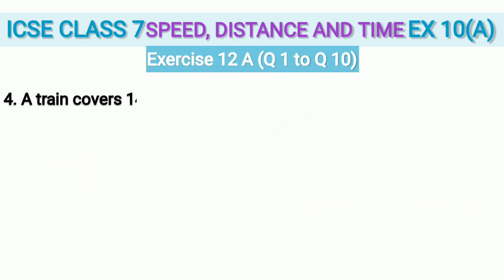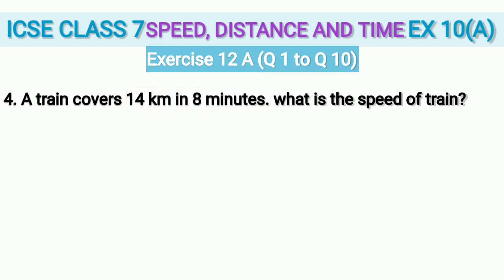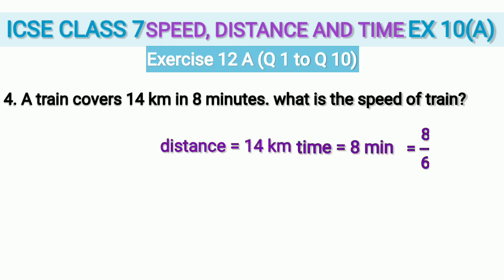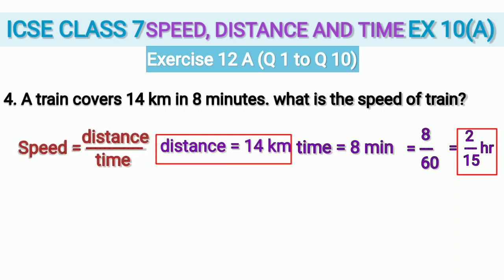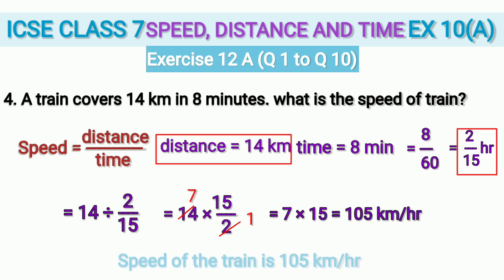Question 4: a train covers 14 km in 8 minutes. What is the speed of the train? We are given distance in kilometres and time in minutes. To find speed in km/h we convert 8 minutes to hours: 8/60, cancel using the 4 times table to get 2/15 hours. Substituting in speed = distance ÷ time: 14 ÷ (2/15) = 14 × 15/2. Cancel 14 and 2 — leaving 7 × 15 = 105 km/h. So the speed of the train is 105 km/h.